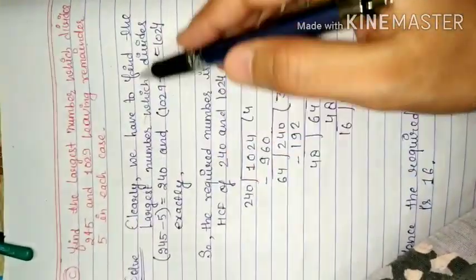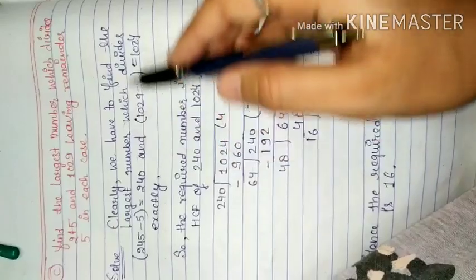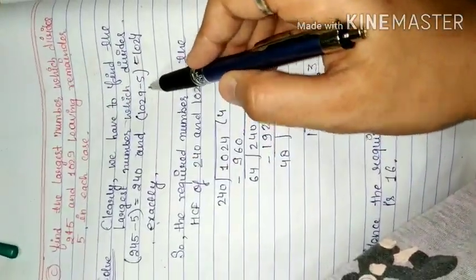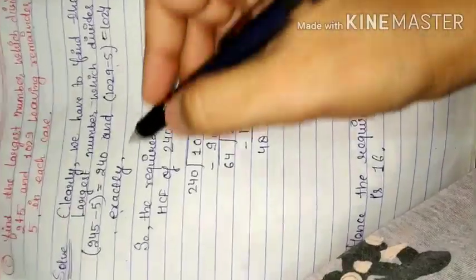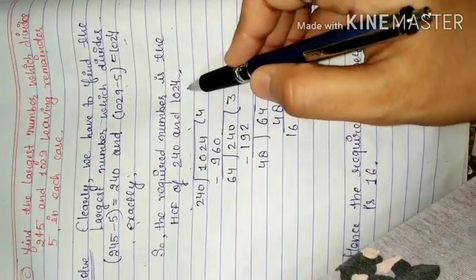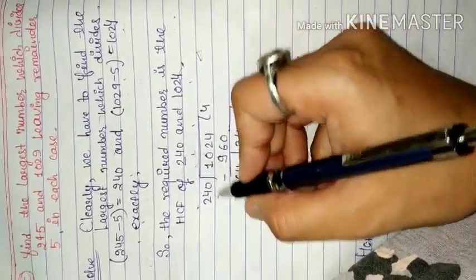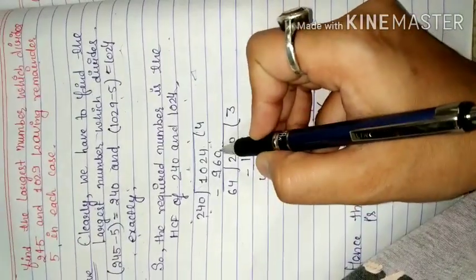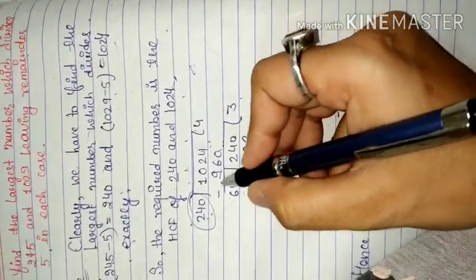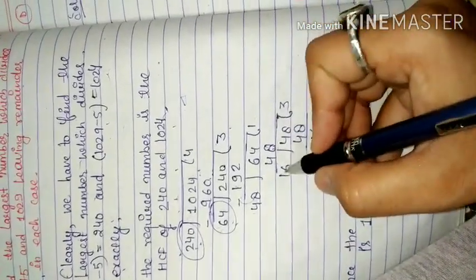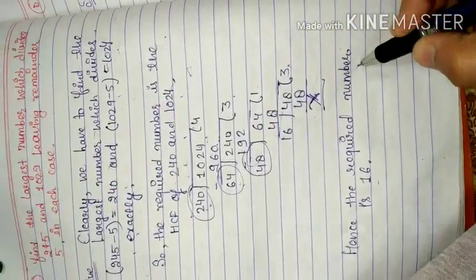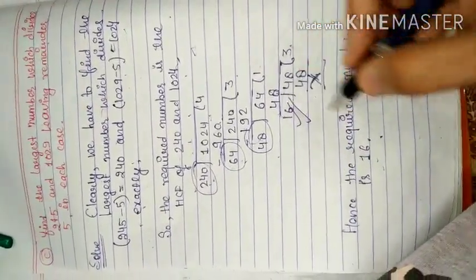When we have a remainder, we subtract that remainder from each number. We have to find the largest number. The number divides 245 with remainder 5 and 1029 with remainder 5. So we subtract 5 from both: 240 and 1024. The required number is the HCF of 240 and 1024. Using division method, we get 16 as the answer.